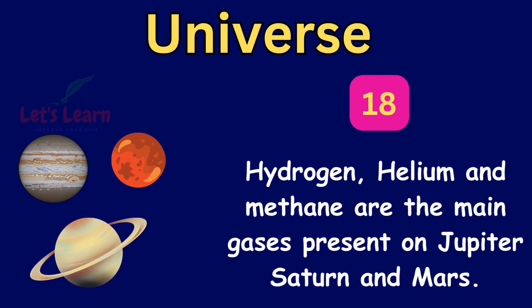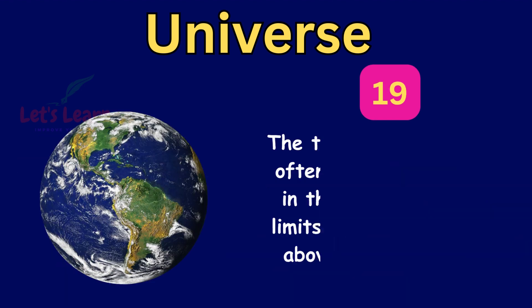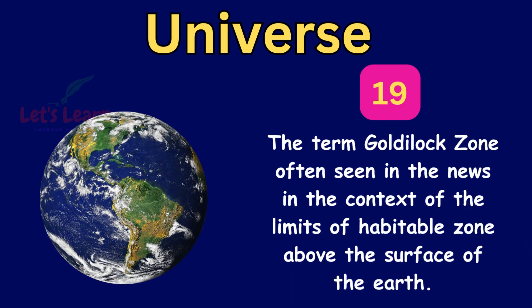Hydrogen, Helium and Methane are the main gases present on Jupiter, Saturn and Mars. The term Goldilocks zone is often seen in the news in the context of the limits of habitable zone above the surface of the Earth.